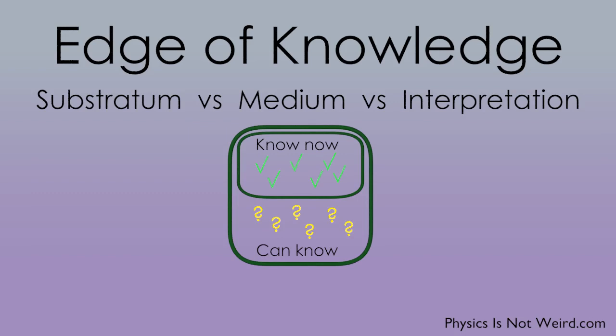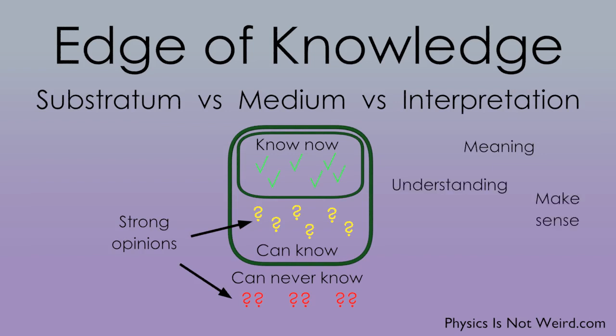And then there's likely to be stuff that we can never know, but that still exists. Now there are lots of strong opinions on what we have here and here. And when people discuss it, they get vague. They talk about what the equations mean, how to understand or make sense of a theory, or what physics is telling us, or what's really going on.